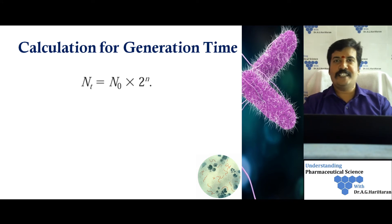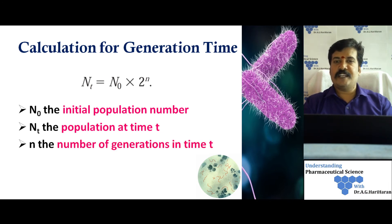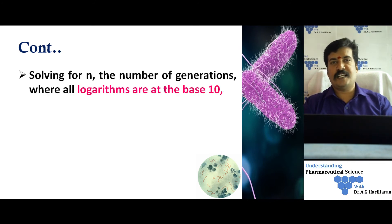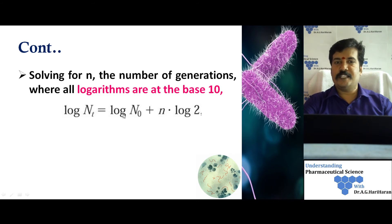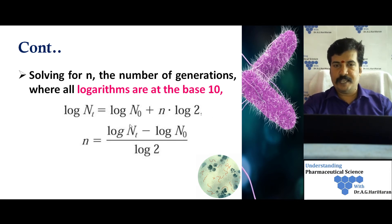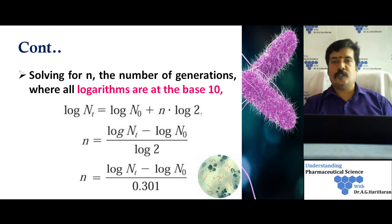Starting from the basic formula Nt = N0 × 2^n, we take logarithm to base 10 on both sides: log Nt = log N0 + n × log 2. Rearranging, we get: n = (log Nt − log N0) / log 2 = (log Nt − log N0) / 0.301. This gives the number of generations n in terms of measurable population values.